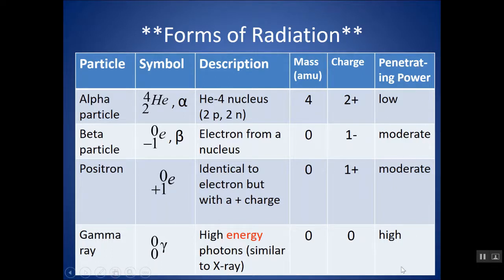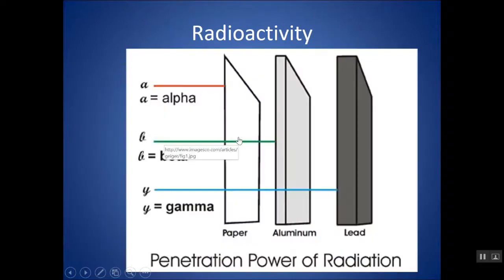One thing not in Table O is penetrating power. The alpha particle, being a helium-4 nucleus with the highest mass and charge, has the lowest penetrating power. Gamma rays have no mass and no charge — just pure energy — giving them the highest penetrating power. Alpha particles can be stopped by a thin sheet of paper, beta particles by a strip of aluminum, and gamma particles require a thick sheet of lead. This is why the heavy lead vest used during x-rays is so heavy.